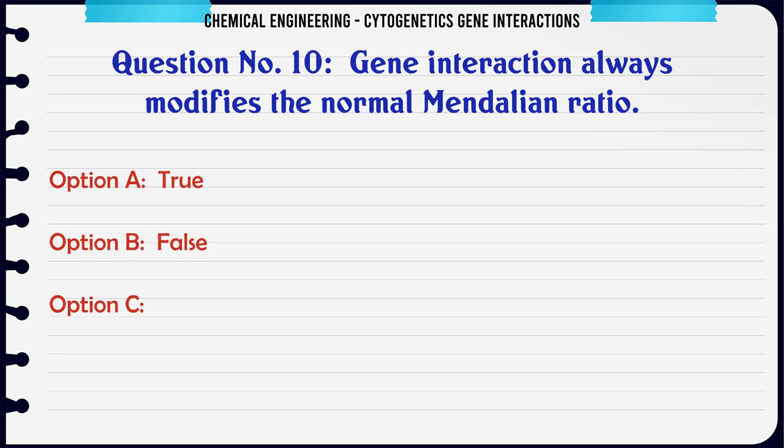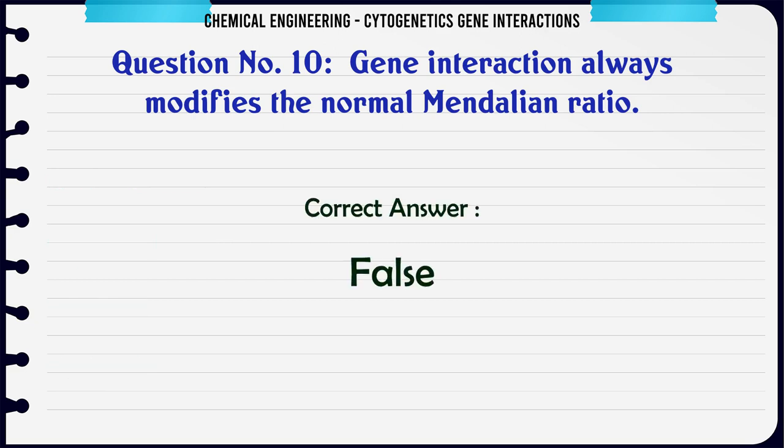Gene interaction always modifies the normal Mendelian ratio. A. True, B. False. The correct answer is False.